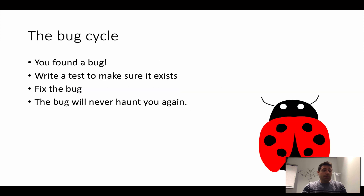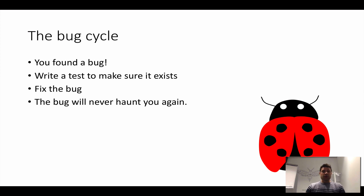We discussed the bug cycle: as a developer, whenever I find a bug I want to write a test to make sure it exists first, then I fix the bug, and then the test stays there forever. This assures us that the bug will never come back, because there's a test now and this test will catch it if the bug returns.